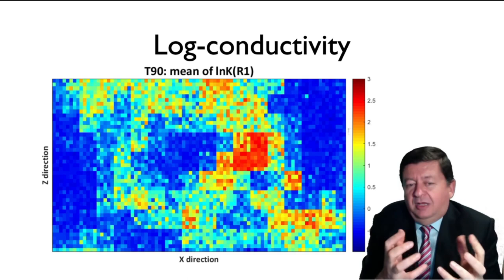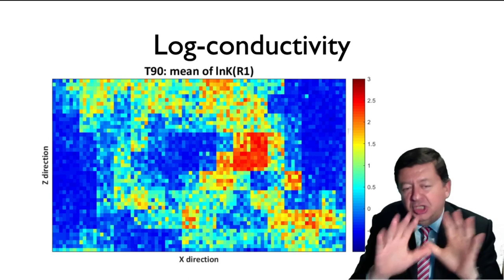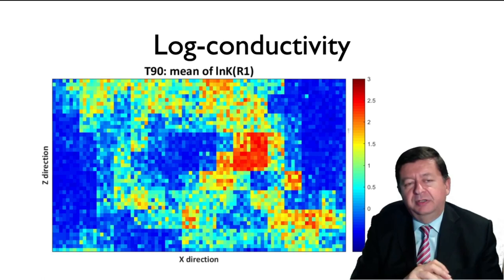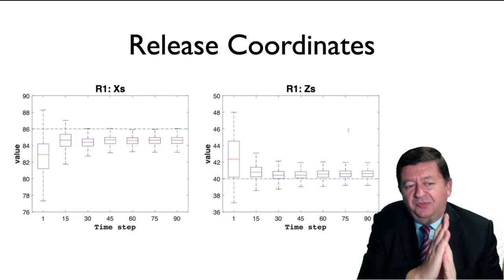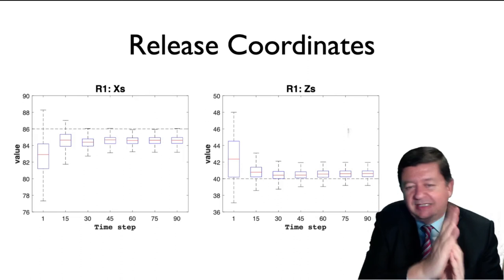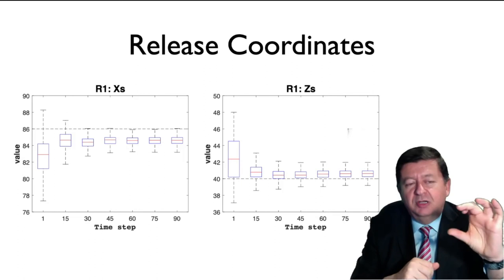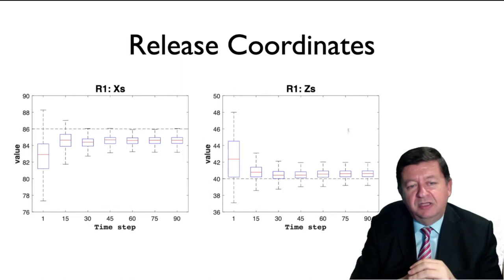It's clear that we are not getting back exactly the binary heterogeneity that is actually in the sandbox, but it's clear that we are capturing the heterogeneity. We are also able to identify the coordinates of the release. What you have here is the estimate of the X and Z coordinates of the release as a function of time, and because of the way the Ensemble Kalman filter works, you have a band of estimates — a range given by box plots with the red line being the mean value, the best estimate of the location.